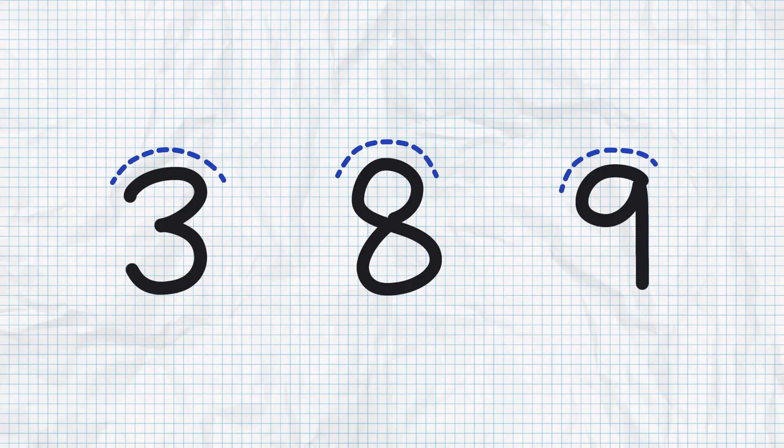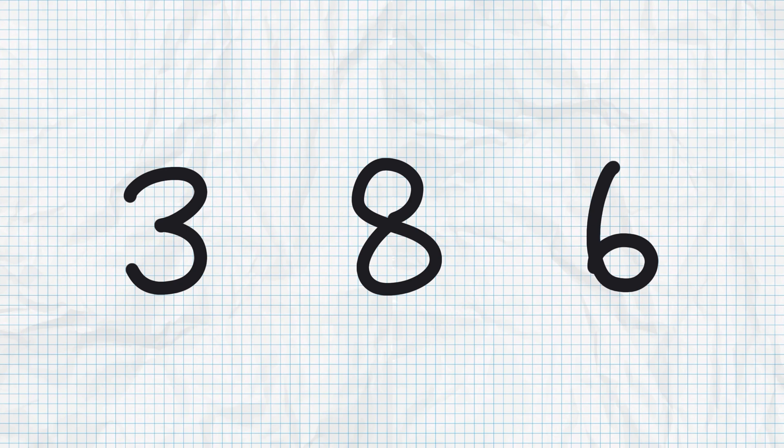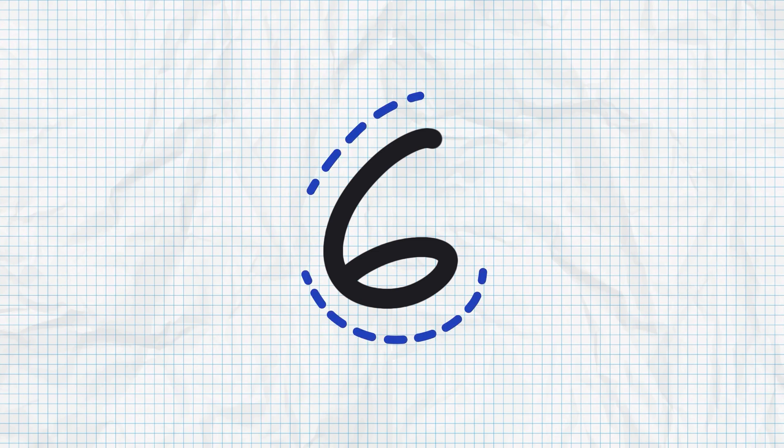Hidden layers are like the secret sauce behind this whole process. Think of what they do as using really elegant math to do pattern recognition. For example, they might notice that threes, eights, and nines tend to have round upper halves, while threes, eights, and sixes tend to have round lower halves. So if our computer sees this guy from the start of our video, it'll run calculations in its hidden layers to recognize that it has a round lower half but not a round upper half. So by process of elimination, there's a good chance it's a six.